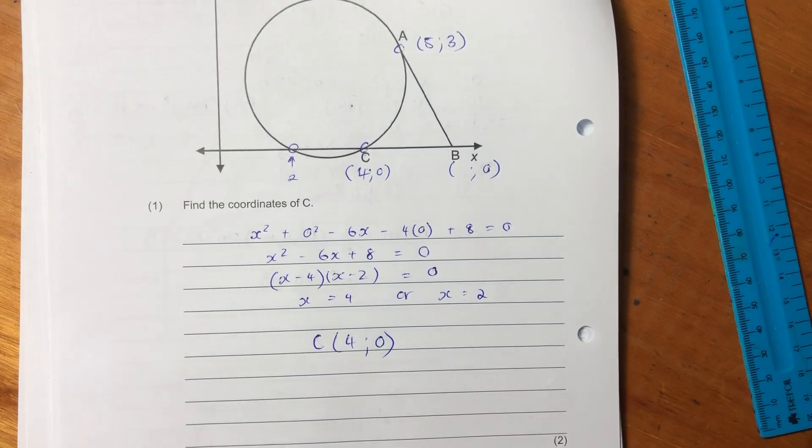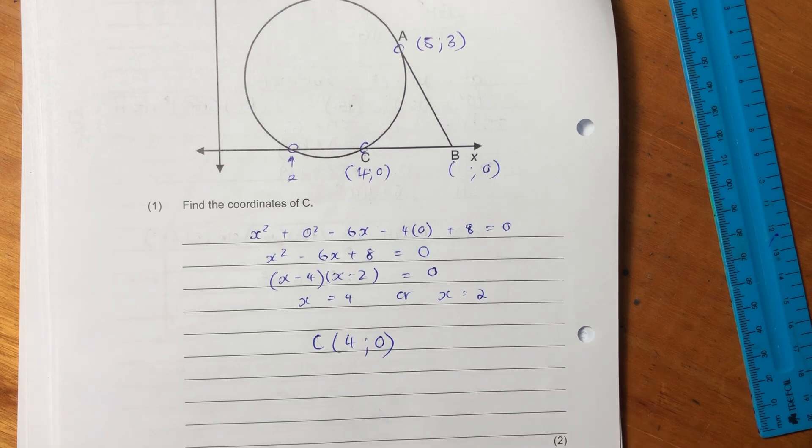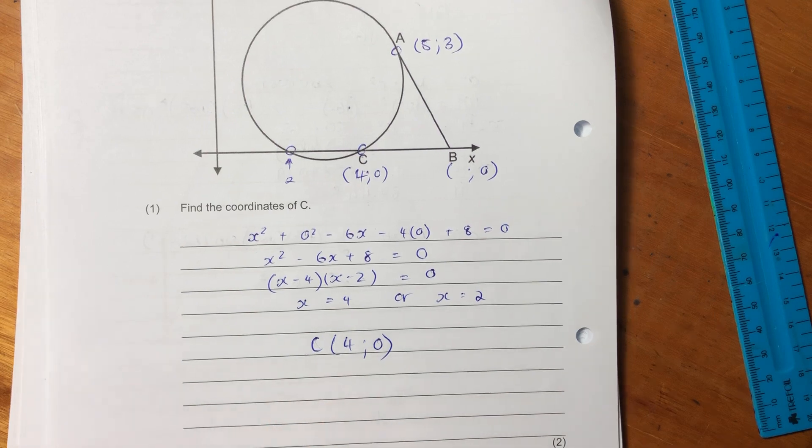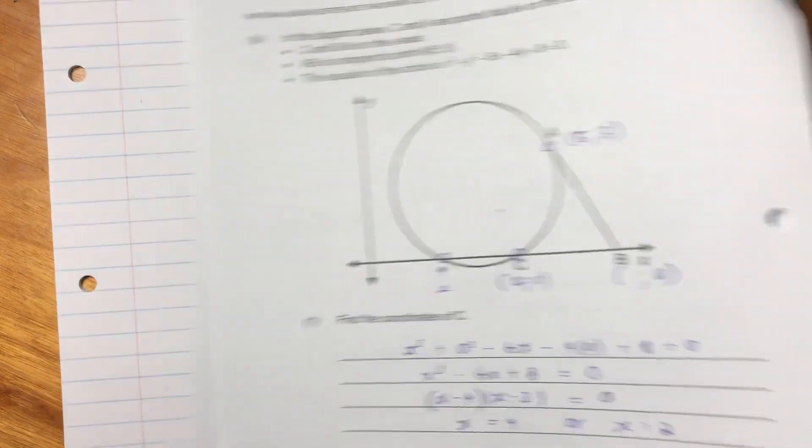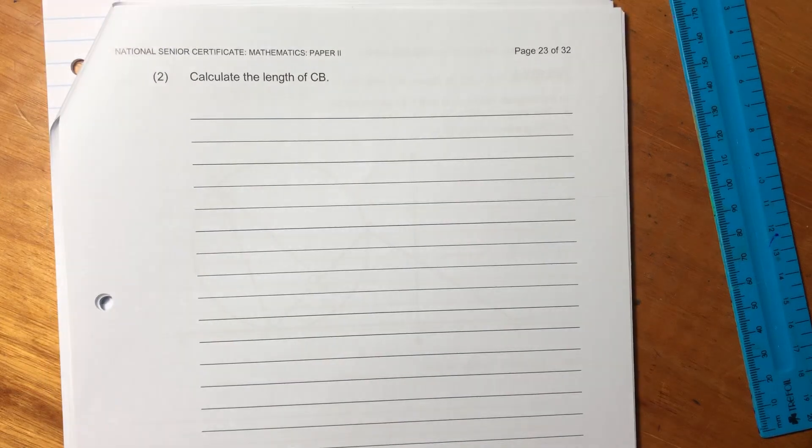So C's coordinates are 4 and 0. So it's important to remember that the diagram is a tool for you. I think often students disregard the diagram with questions like this, but the diagram does give you a bit of steer. So we've done C. Let's now move on to the next question.